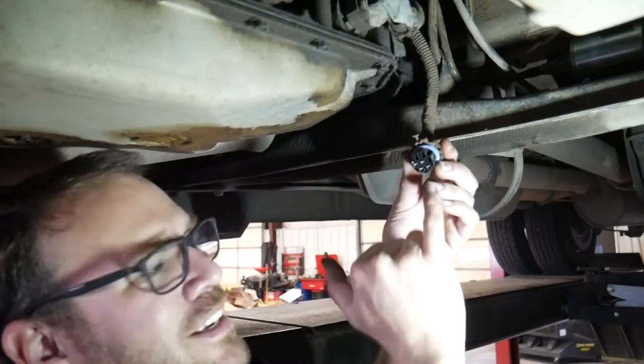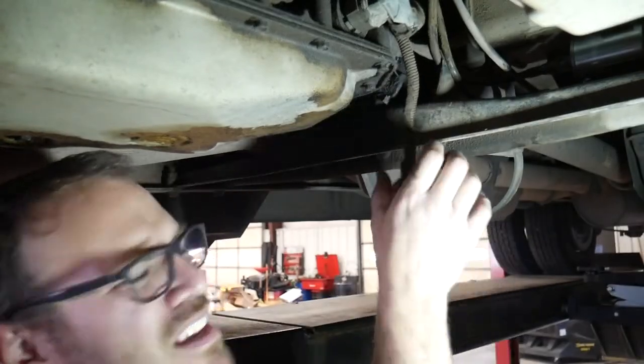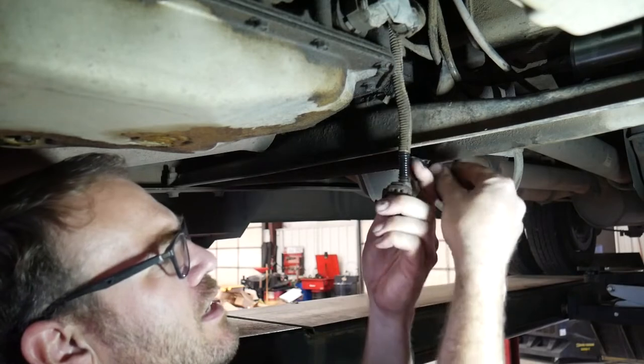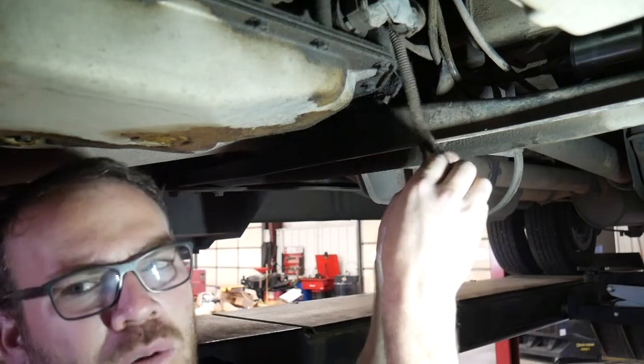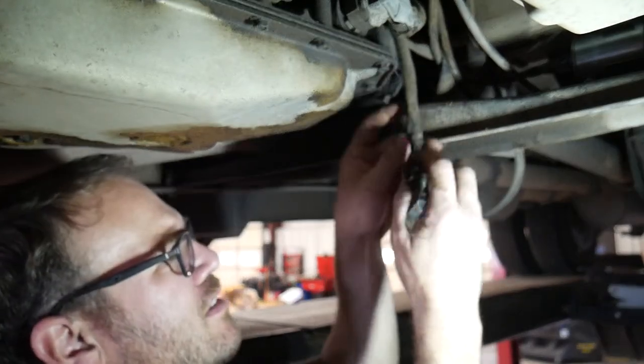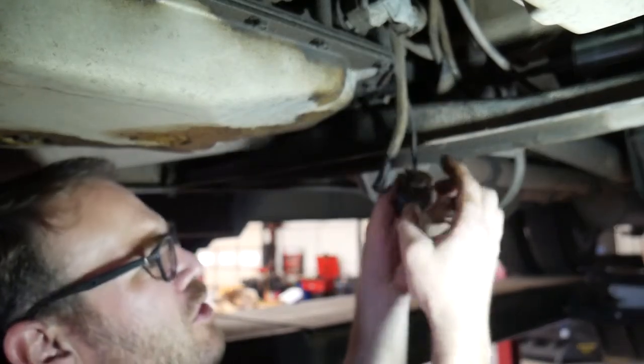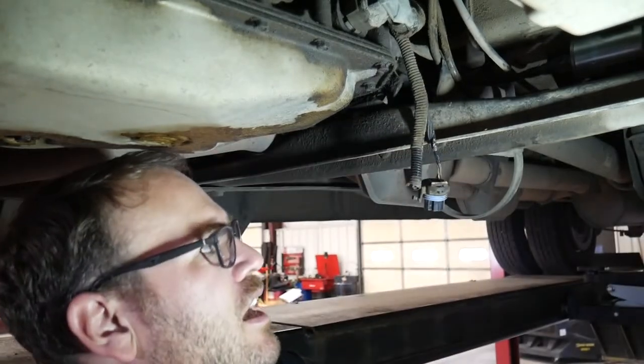So even though it's a round connector, it does have the flat blade style Metropack connectors. I'm not sure if it's the smaller terminals or the bigger terminals. I think the smaller ones are the 150 series. The bigger ones are 280. Not sure what the numbers mean, but I have both sets in stock.